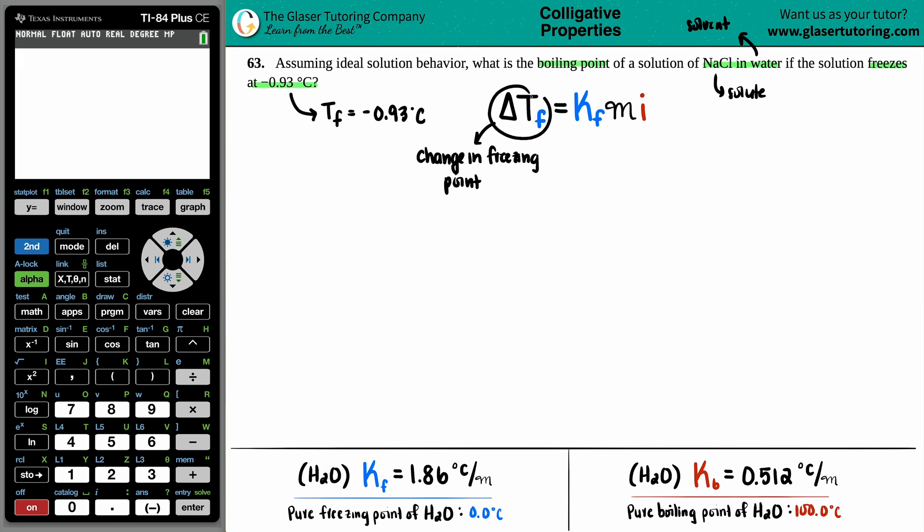Now, keep in mind that this delta T value always needs to be a positive value. So we need to find that change, which means the difference. So just subtract these two values to get it to be a positive value. If you do subtract them and you get to be a negative value, just make it positive. So what I'm going to do is I'm going to take my pure, and my pure for the water is zero degrees Celsius, and I'm going to subtract it from the solution freezing point. And the solution freezing point they told me was a negative 0.93. And two negatives make a positive. So my change in the freezing point is going to be the 0.93 degrees Celsius.